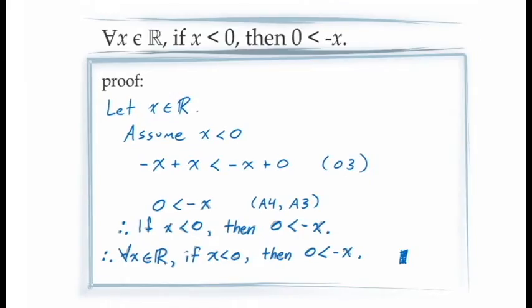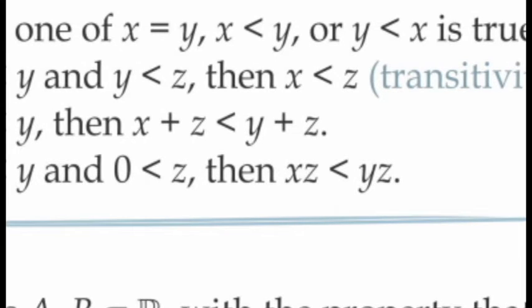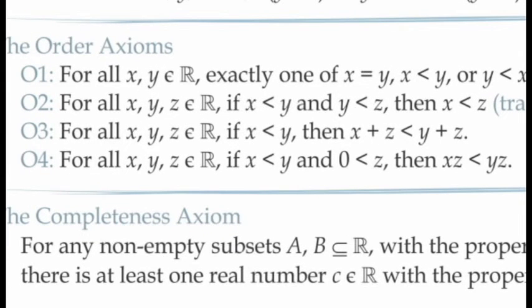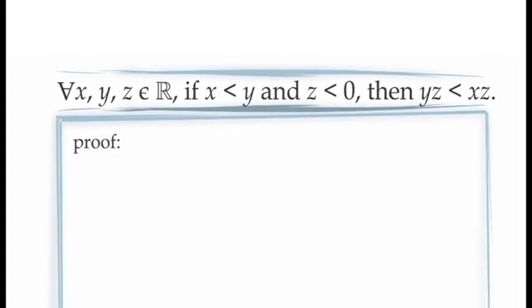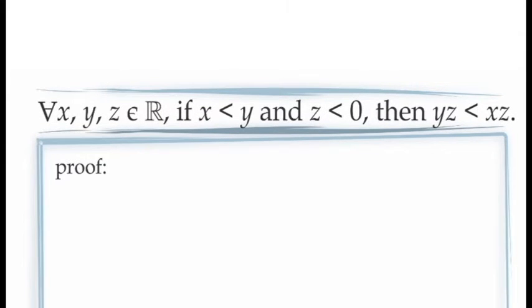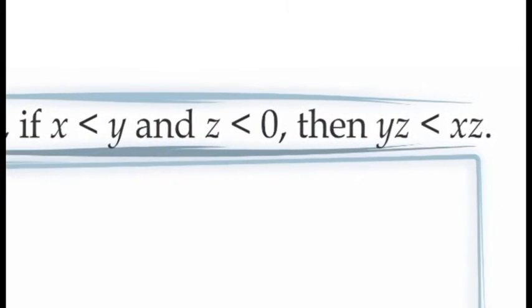Let's look at a slightly harder example. Recall that axiom O4 says: if x < y, we can multiply both sides of the inequality by z, provided z > 0 — multiplying an inequality by a positive number preserves the inequality. We're probably all familiar with the idea that multiplying an inequality by a negative number reverses it, but this is not included in the axioms, so it needs to be proved. We're going to prove: for all x, y, and z in the real numbers, if x < y and z < 0, then multiplying both sides by z reverses the inequality, giving yz < xz.